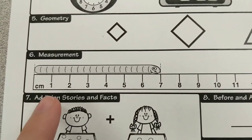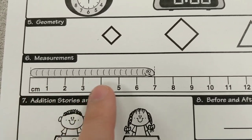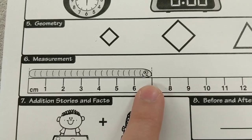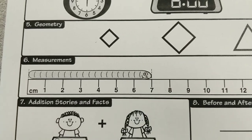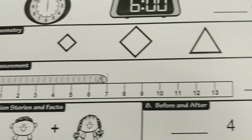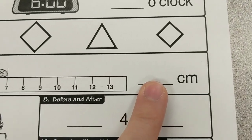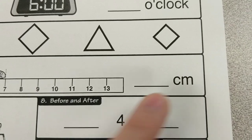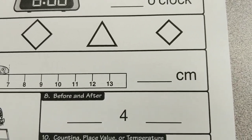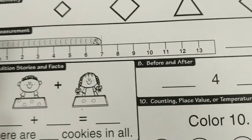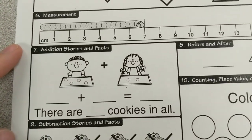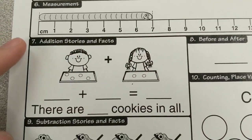Number six: measurement. Tell me how many centimeters long that worm is. When you find it, write it over here with centimeters. If you need to pause this video as you're doing your work, you can do so.